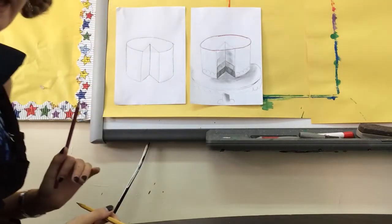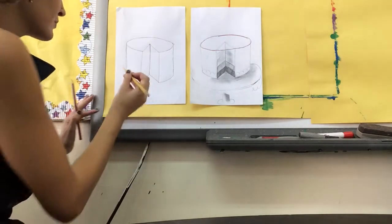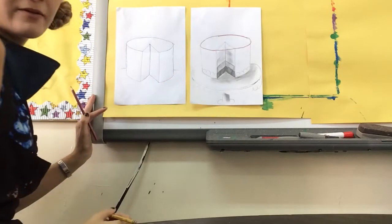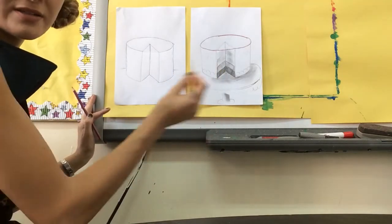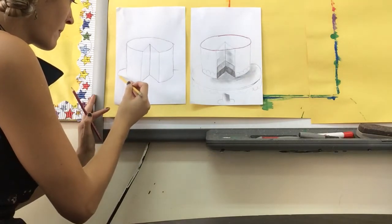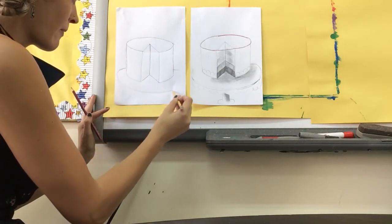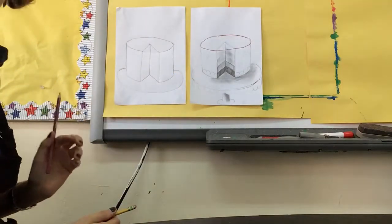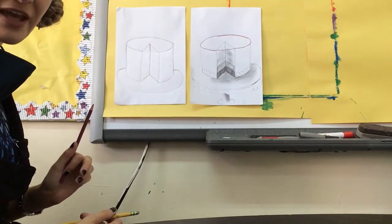Now I'm going to add the platter that the cake is sitting on. I'm going to come from the sides of the cake here and I'm going to make an ellipse shape around, like that. This is going to be the platter that the cake is on.